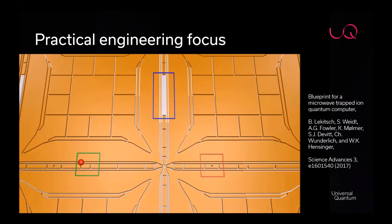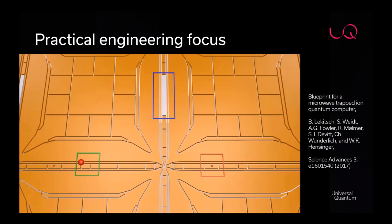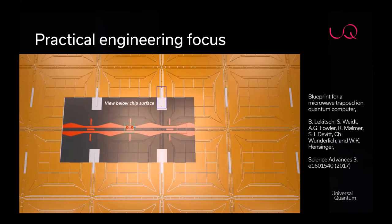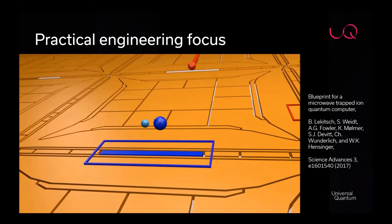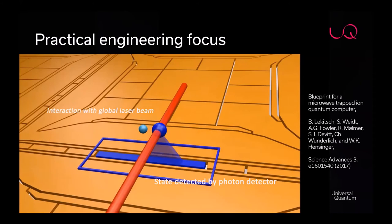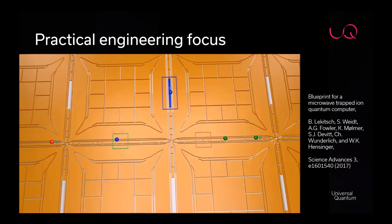The architecture uses an array of X-junctions where we load ions. Two ions — one being a sympathetic cooling ion — are entangled using global microwave fields and integrated current wires. After the entanglement operation, ions are transported to a detection zone where a detector integrated into the silicon microchip surface reads them out. Global laser beams are used for fluorescence detection and can serve thousands of ions simultaneously.